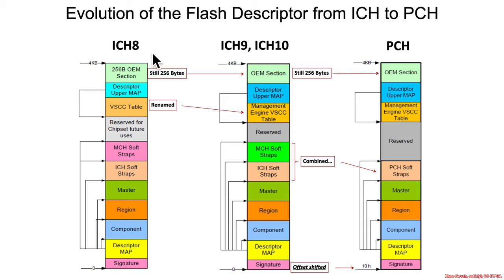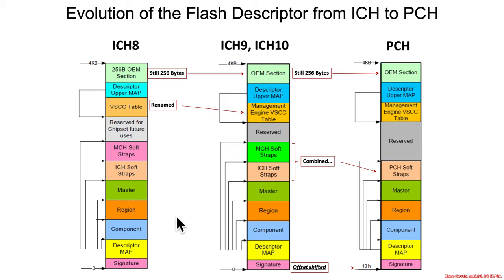If the ICH looked like this, it had an uppermost portion called the 256-byte OEM section — subsequent documentation just calls it the OEM section, but it's still 256 bytes. There was also a portion called the VSCC table, which has been renamed the Management Engine VSCC table, and the signature has moved to offset 10 instead of offset 0 where it used to be.